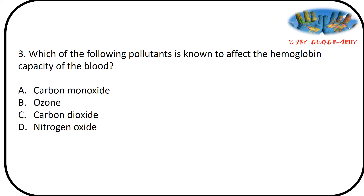Third question: which of the following pollutants is known to affect the hemoglobin capacity of blood? Options: carbon monoxide, ozone, carbon dioxide, nitrogen oxide. Answer is carbon monoxide. Carbon monoxide reduces the amount of oxygen in blood.